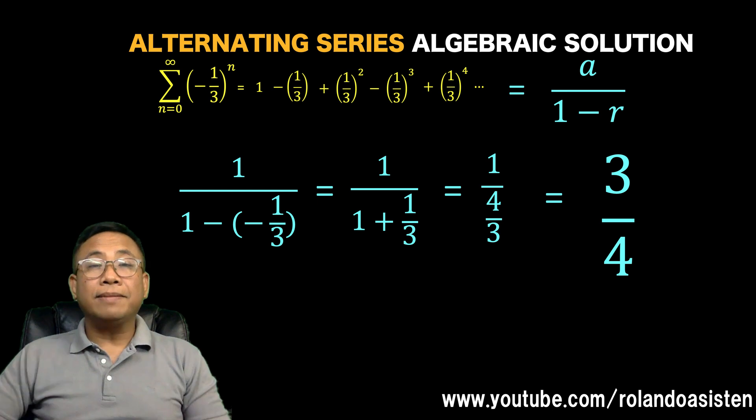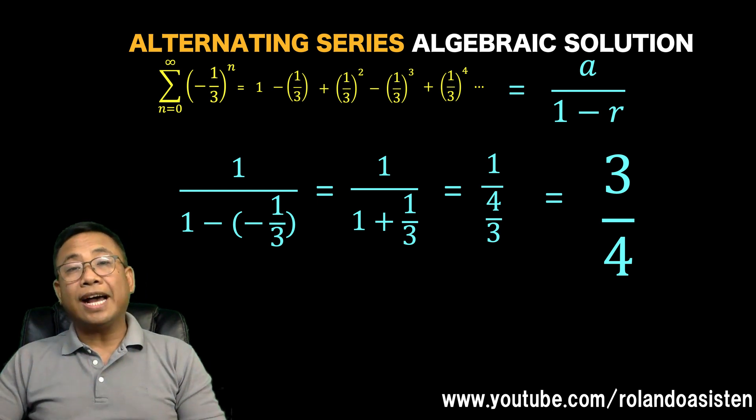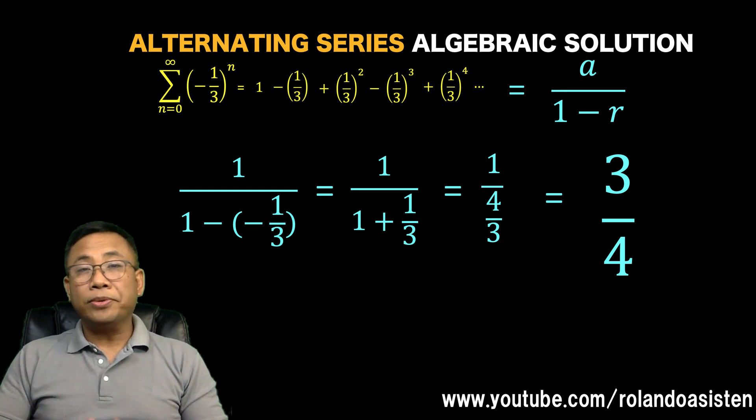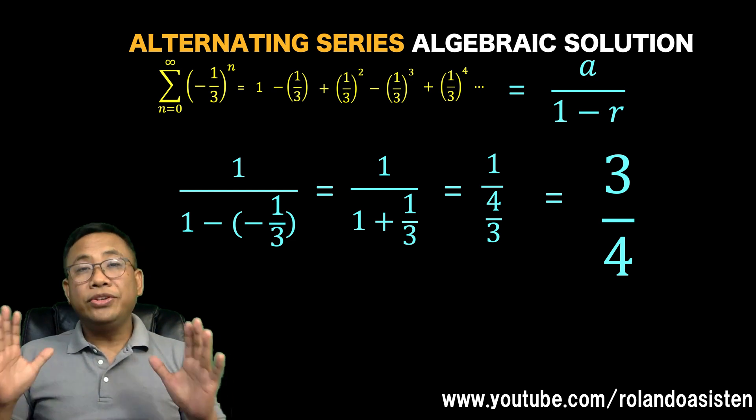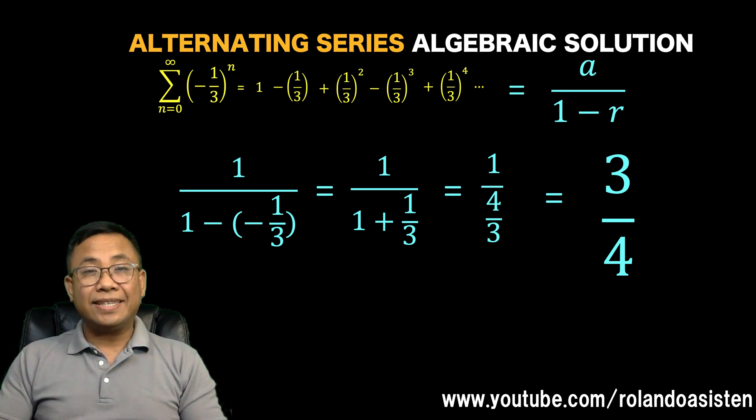So those are the two phases of math. One is the more efficient algebraic method, and the other is the more beautiful visual method. So even without numbers, you can see that mathematics exists in the real beautiful world. Thank you very much and we hope to see you again in our next video.